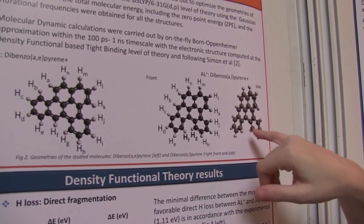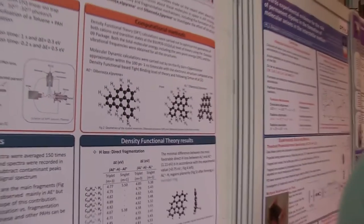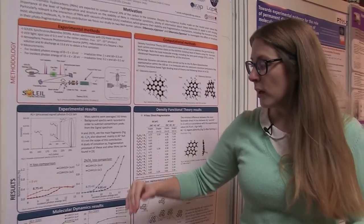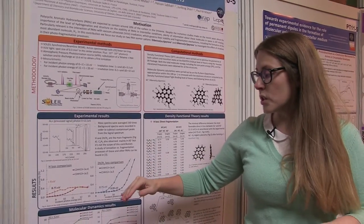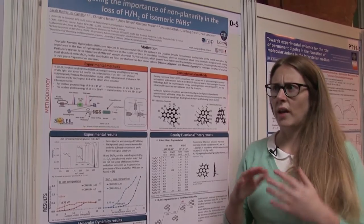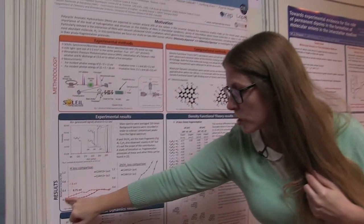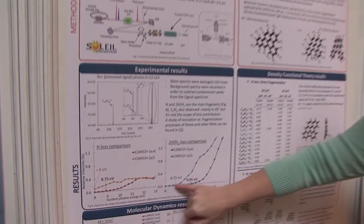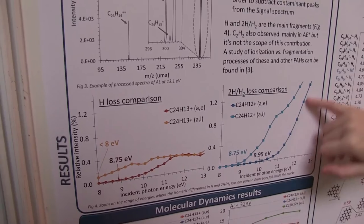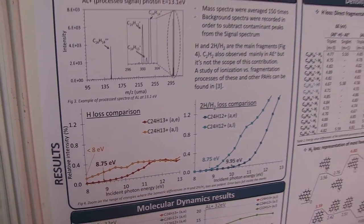This nonplanarity is due to the steric hindrance of these two hydrogens. We trapped these molecules in a linear ion trap and observed that under the incidence of VUV photons of eight electron volts onwards, the nonplanar molecule starts losing one and two hydrogens at lower energies than the planar one. You can see here the energy threshold for dehydrogenation.